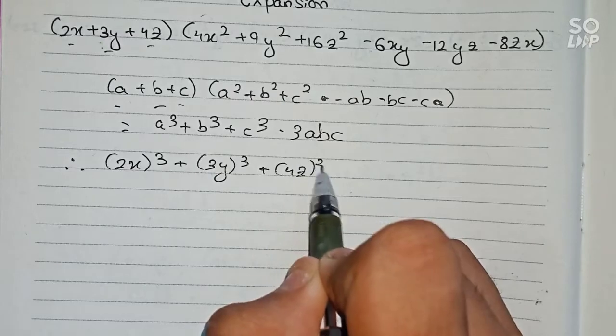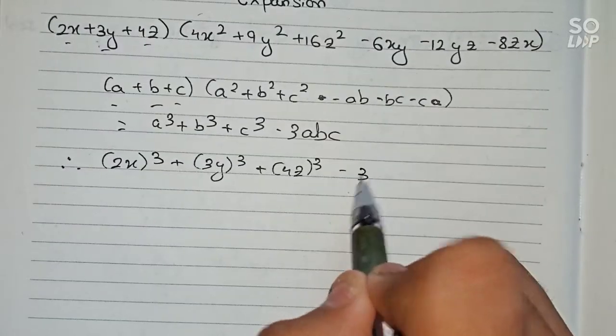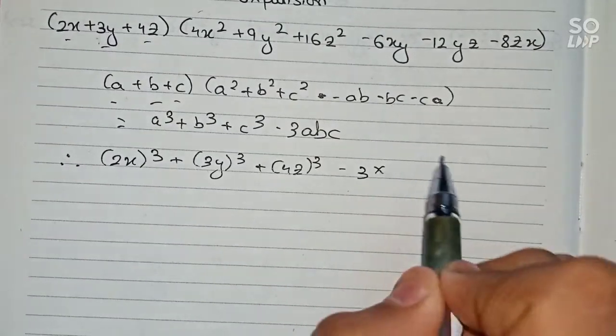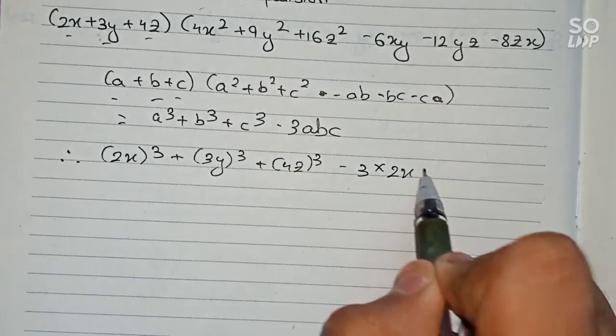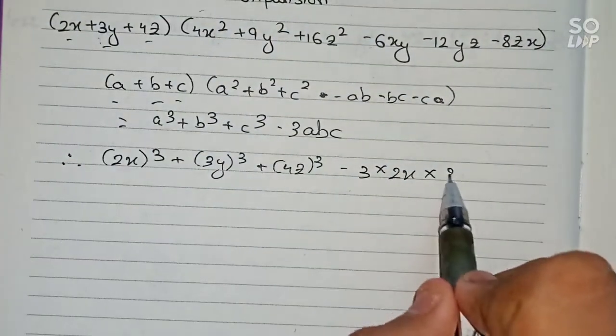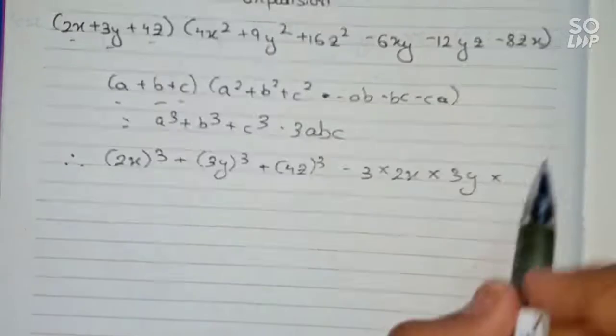Then minus 3abc means minus 3 multiplied by 2x multiplied by b, that is 3y, multiplied by c, that is 4z.